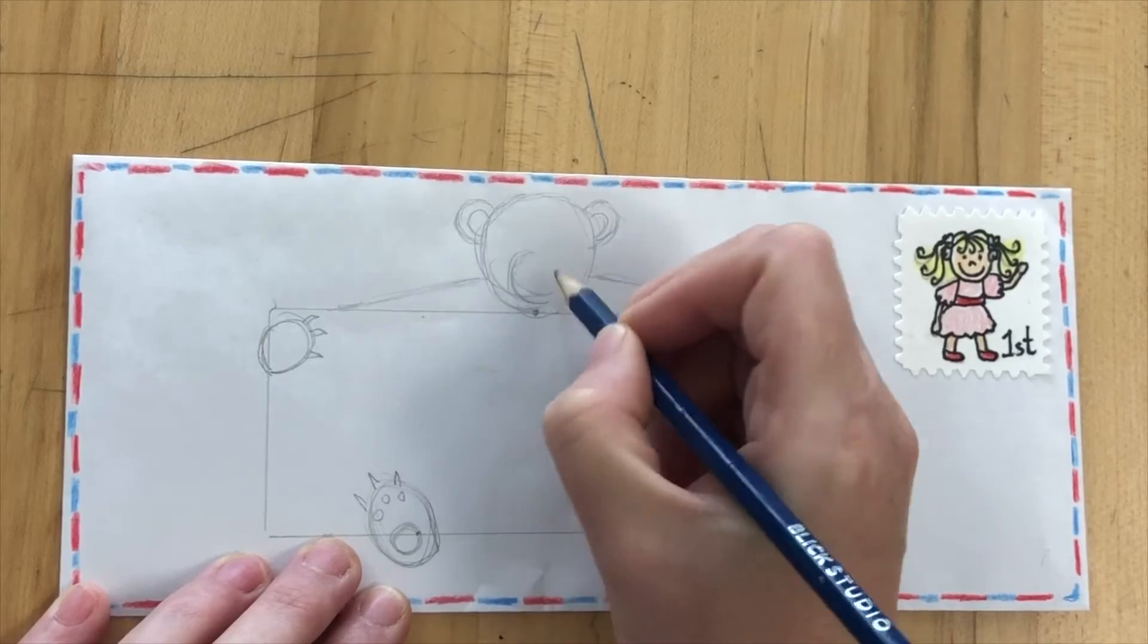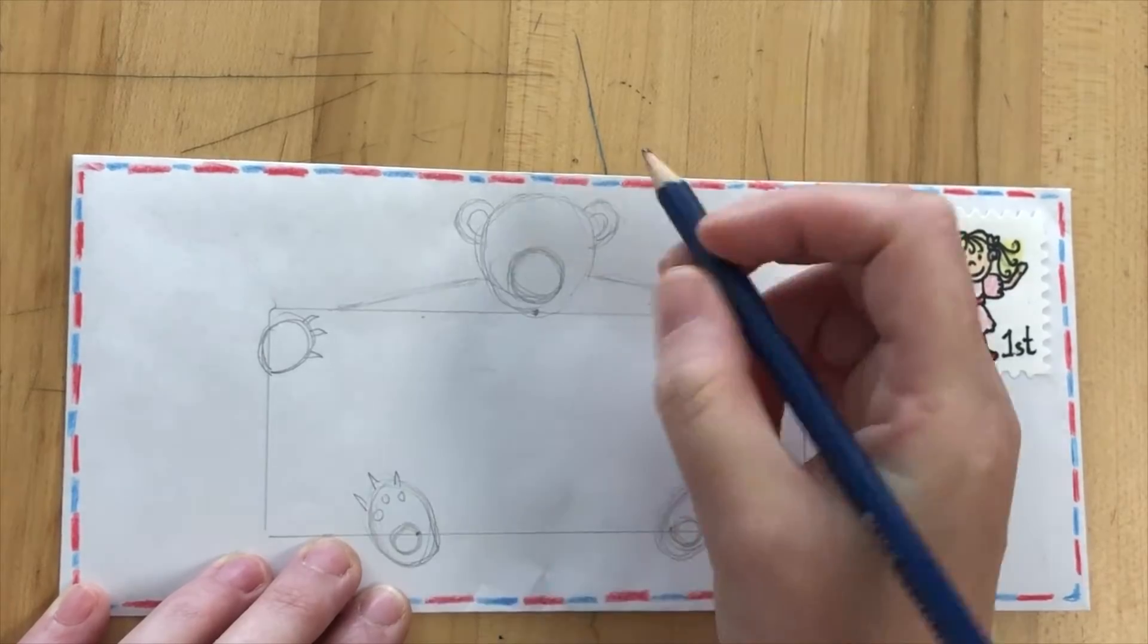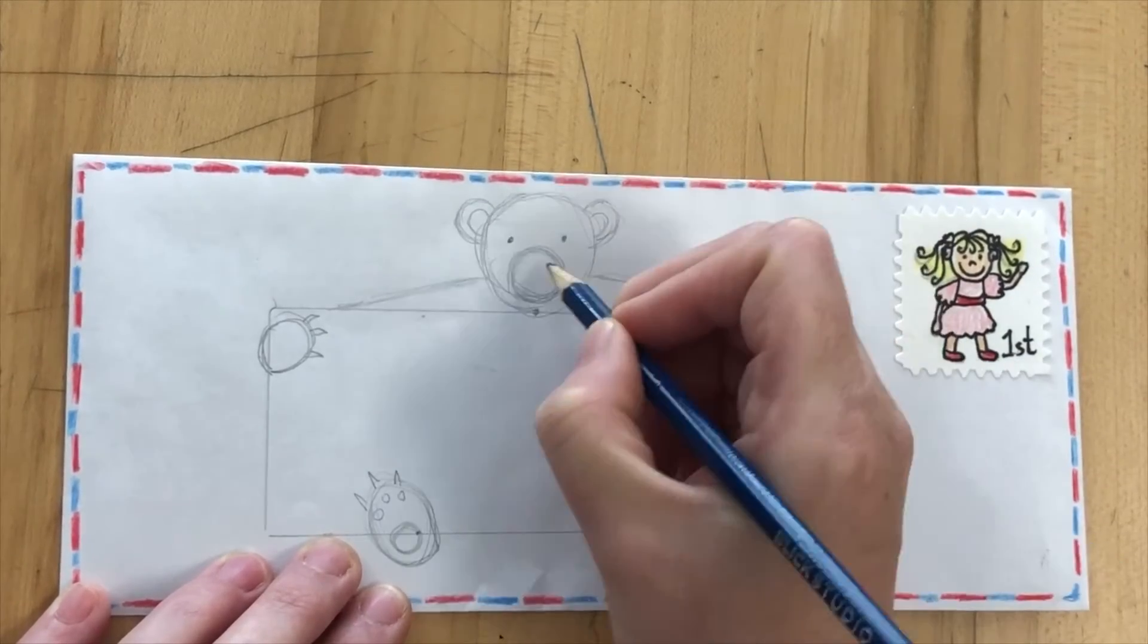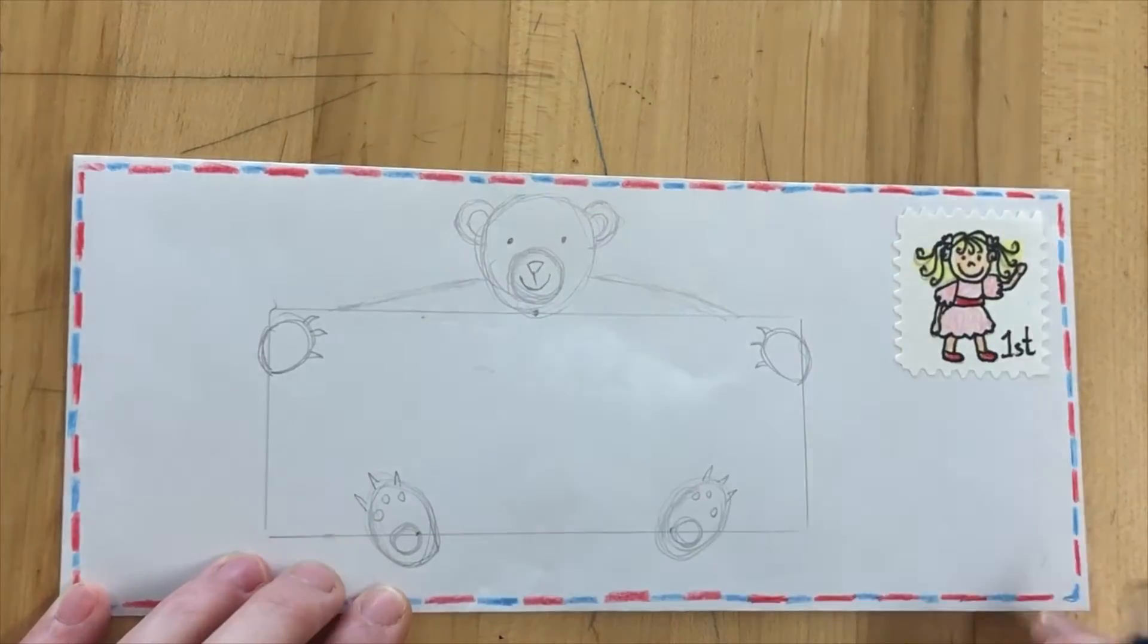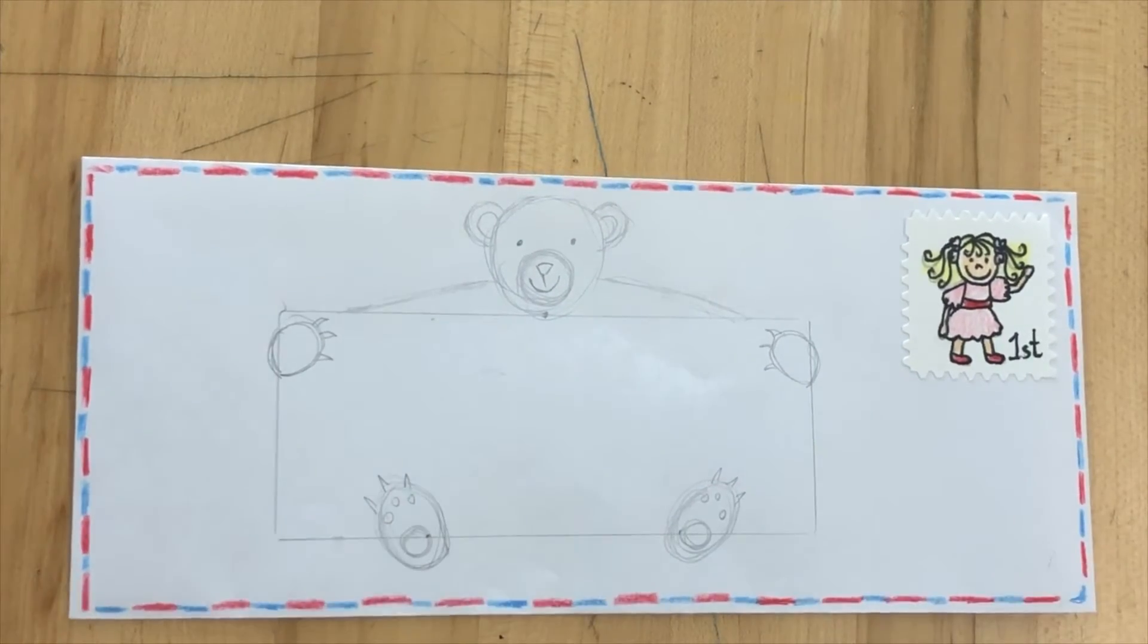When you do the bear's face you need to do another circle but much lower down almost touching the bottom of the original circle. Then two little dots for eyes, a nose and a mouth.